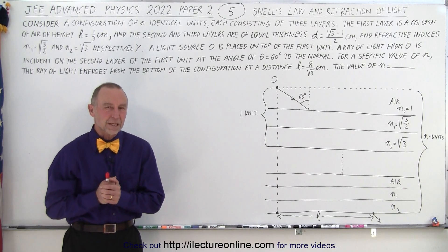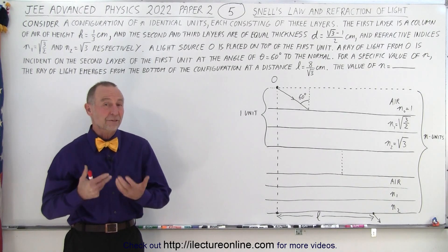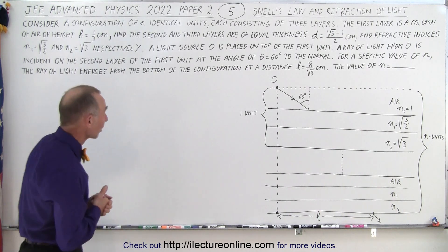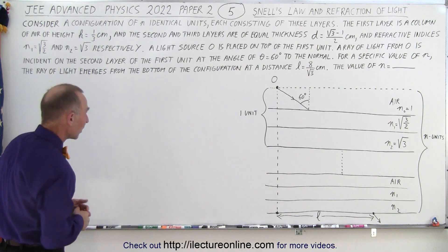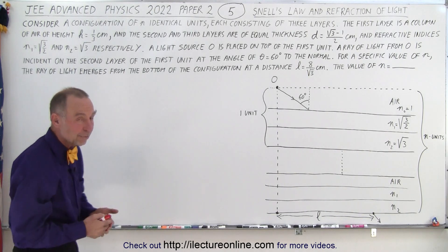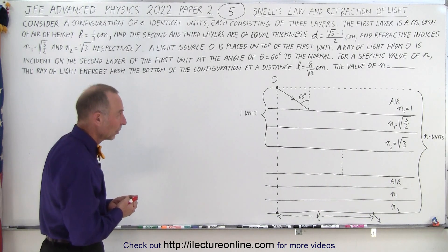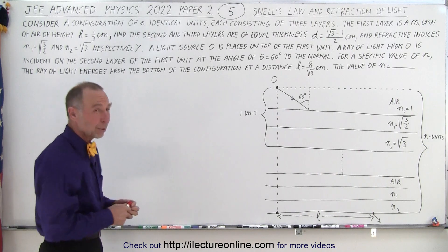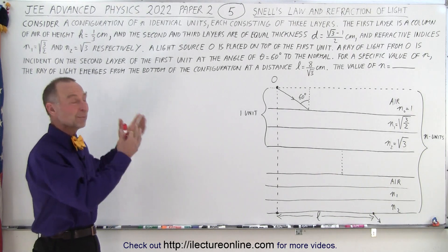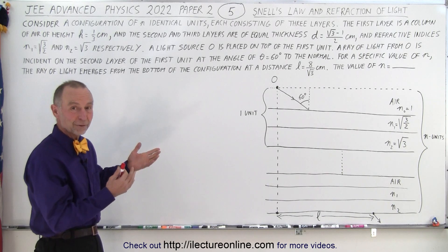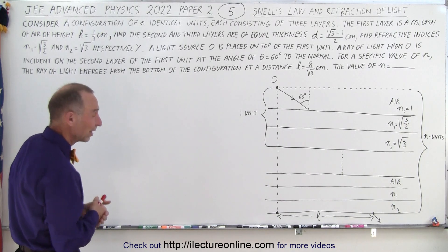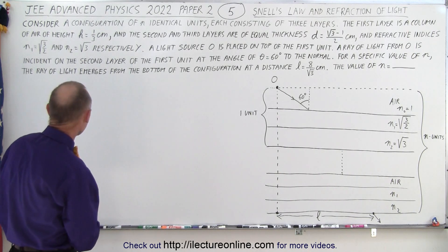Welcome to ElectroOnline. Here we have the fifth problem from Paper 2, 2022 on the physics section for the JEE Advanced test, dealing with Snell's law and the refraction of light. It's a long problem that almost takes three minutes just to read and figure out what's going on before you can even start solving it, which makes it one of those particularly challenging problems.